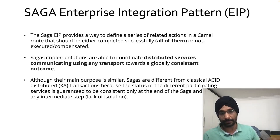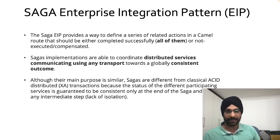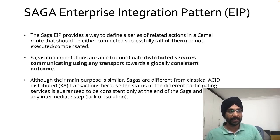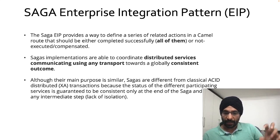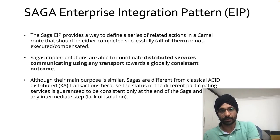Apache Camel provides a SAGA EIP (Enterprise Integration Pattern) that defines a series of related actions in a Camel route that should either all complete successfully or all be compensated. Sagas can coordinate distributed services towards a globally consistent outcome. Unlike classic ACID transactions, the status across participating services is only guaranteed to be consistent at the end of the saga — it's essentially an eventual consistency model, meaning intermediate dirty reads are possible.